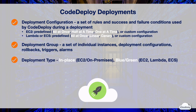CodeDeploy supports two deployment types: in-place deployments and blue-green deployments. For in-place deployments, the old application on each instance in the deployment group is stopped, the latest application revision is installed, and the new version of the application is started and validated. Only EC2 or on-premises deployments can use the in-place deployment type. For blue-green deployments, the new application revision is deployed to a new set of resources. Traffic is shifted from the old environment to the new environment, and both old and new environments are running during the deployment. You can use the blue-green deployment type for EC2, ECS, and Lambda deployments.